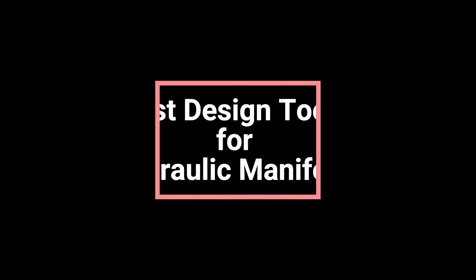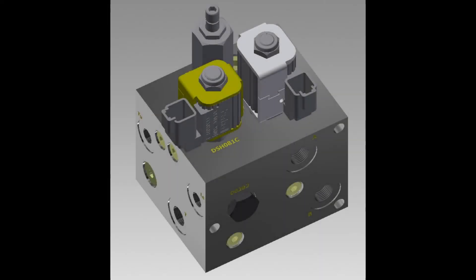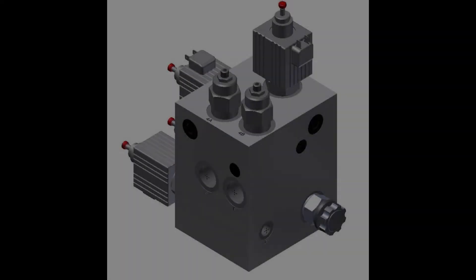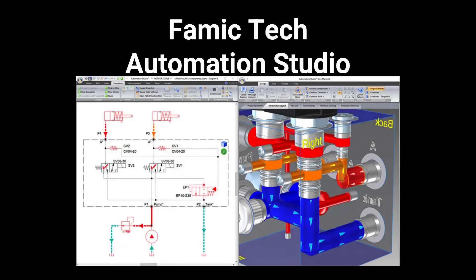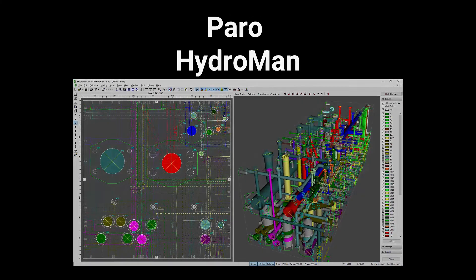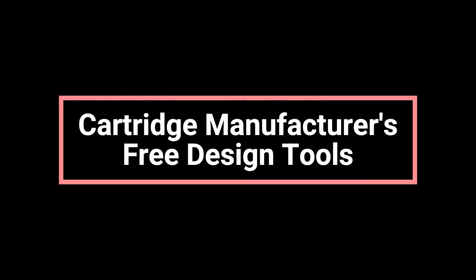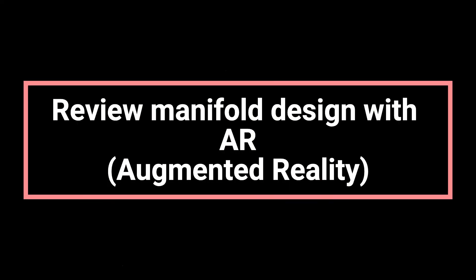So what are the best design tools for hydraulic manifolds? There are several tools in the market for designing a manifold block and assemblies with integrated cartridge valves. Some are package programs belonging to individual companies, such as Famic Technologies Automation Studio, Vest's MD Tools, and Paros HydroMan, as well as cartridge valve manufacturer tools such as Sun Hydraulics Quick Design and HydroForce iDesign.